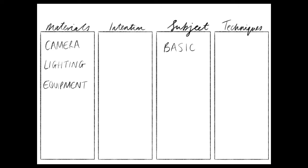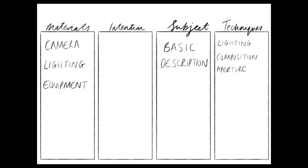The subject is just a really basic description of what you can see in the image. And then the techniques is the area where you can talk about how they've used the lighting, how they've used composition, whether they've used the camera setting in a specific way for a creative effect.